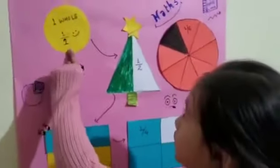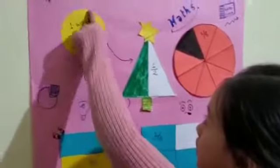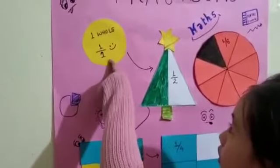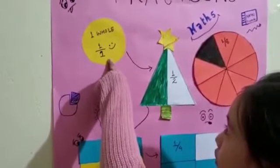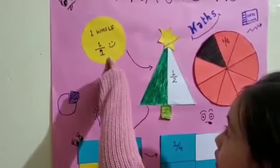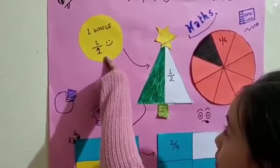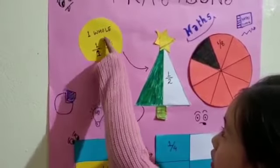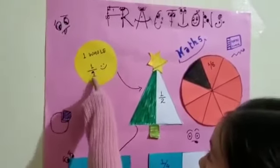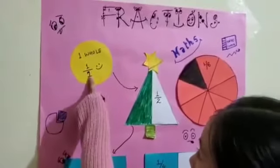This is a yellow circle. You can see the entire circle is yellow, and I have not divided it into any part. So it is whole in fraction, or one by one.